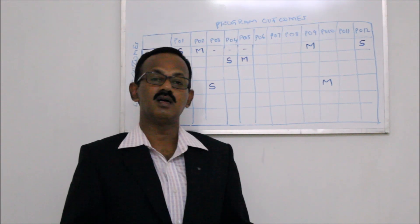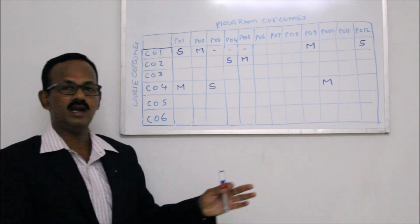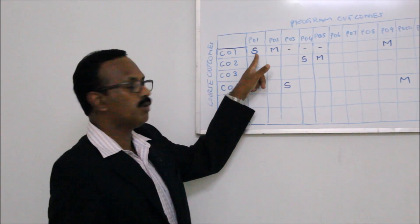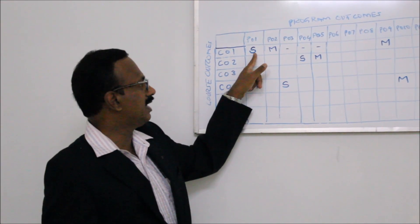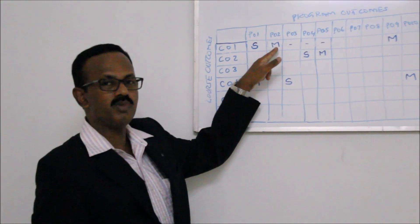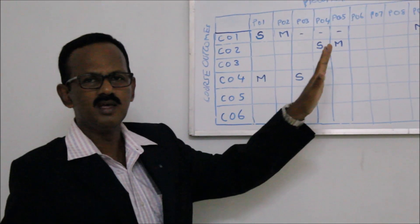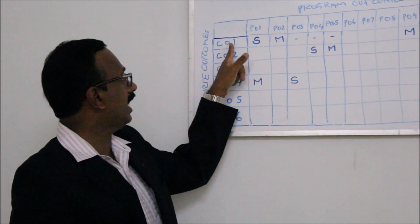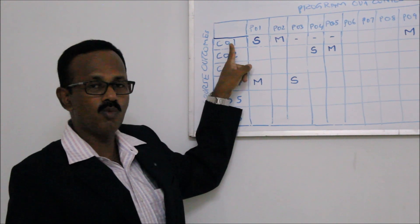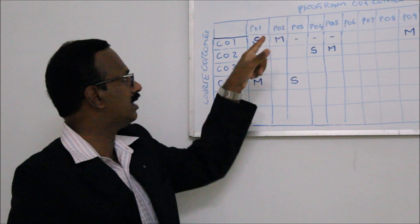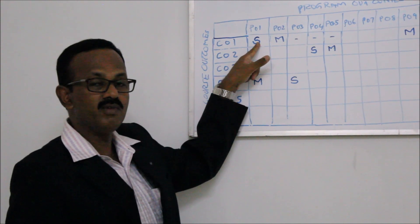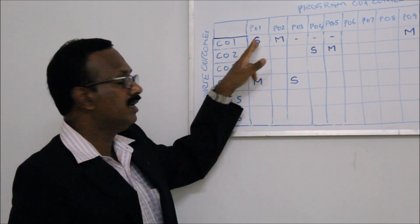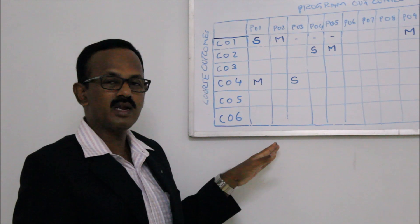This is what is being shown in this particular board, and this is a very important part because based on this many things happen. If you put S for strong in one place and M for medium in another, it never means we should give less importance to one — this is only for the sake of mapping, and when we teach there is no partiality. Then we are going to make a calculation for the attainment of course outcome 1, and whatever value we finally get will be substituted here, and it will automatically contribute to the attainment of the corresponding program outcome.